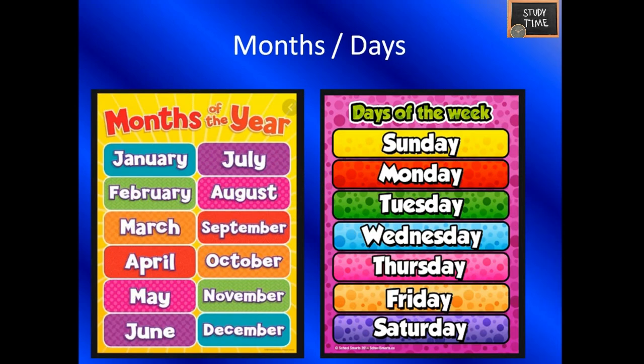These are the months and days — you would have already studied these, so let's recall. The months of the year are: January, February, March, April, May, June, July, August, September, October, November, December. The days of the week are: Sunday, Monday, Tuesday, Wednesday, Thursday, Friday, and Saturday.